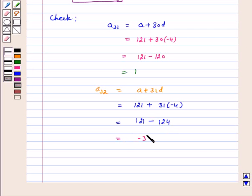So a_31 is positive and after 31 we have taken 32, so a_32 is negative.